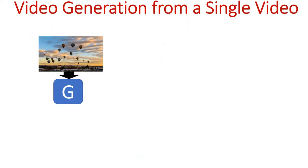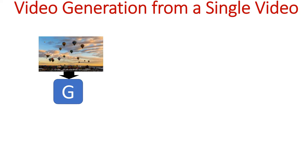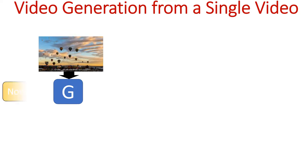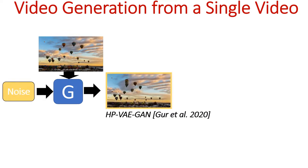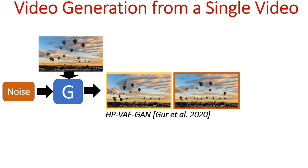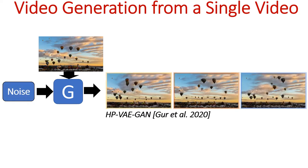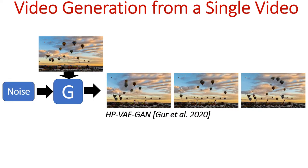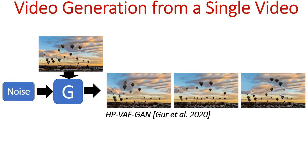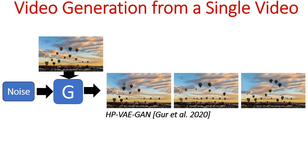Single-video GANs train a generator which is conditioned on a single video with the goal of generating video samples from noise inputs. At inference, each noise input generates a new video sample with similar appearance and motion to the original video used at training.